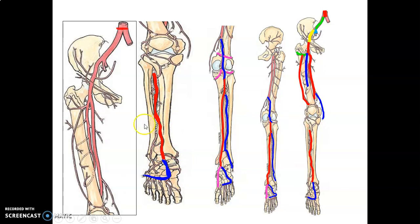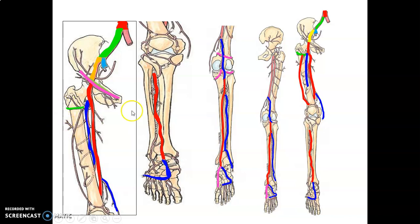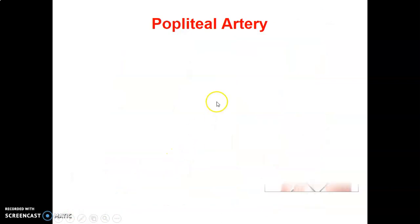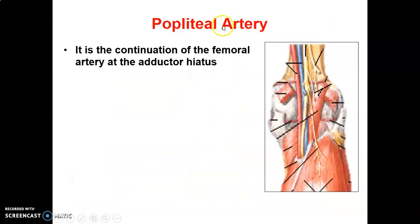The common iliac divides into internal and external iliac; at the mid-inguinal point it becomes the femoral artery. The profunda femoris and its three perforators arise here. At the terminal portion, the fourth perforator forms along with the descending genicular branch and the lateral circumflex femoral artery's descending genicular branch, which participates in the genicular anastomosis.